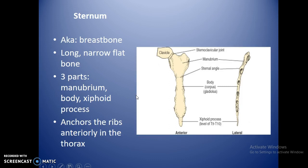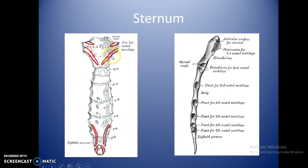The sternum, also known as the breastbone, is a long, narrow, flat bone with three parts: the manubrium at the top, the body in the middle, and the xiphoid process at the very tip — which you may know from CPR. It anchors the ribs anteriorly to the thorax. The clavicles articulate at the SC joint, costal cartilages 1 through 7 attach along the sides, and a lateral view shows all those facets clearly.